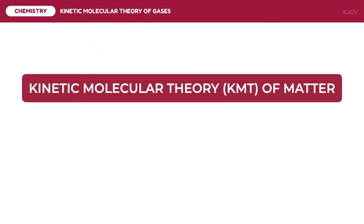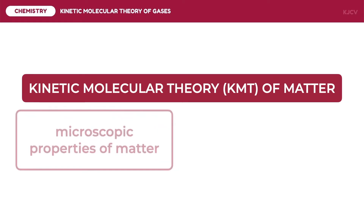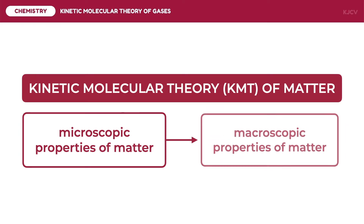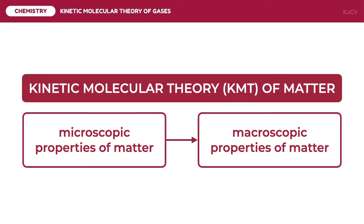Matter is usually defined as something that has mass and occupies space. But how does matter really get to that definition? We use the kinetic molecular theory to define matter. KMT uses the microscopic properties of matter to describe its macroscopic properties. This means that we look closely at the things which happen at the microscopic level, because it does affect how matter becomes matter.